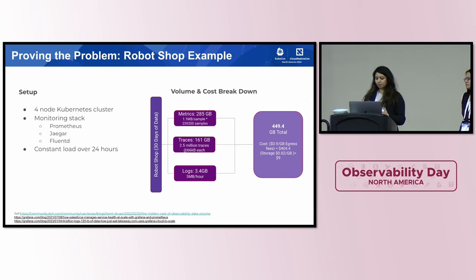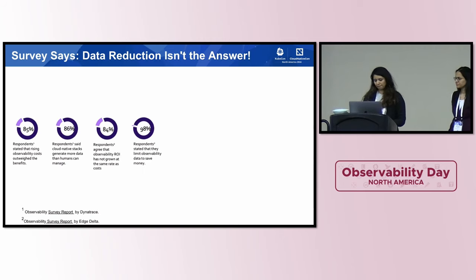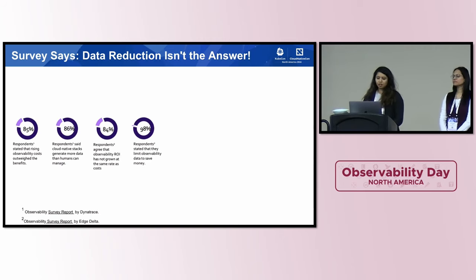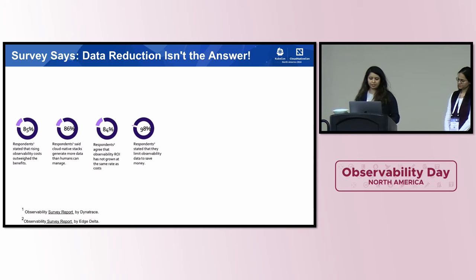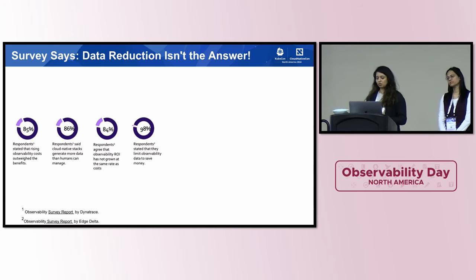We have links to some real-world use cases that generate billions of metrics per day, and you can imagine the exponential growth in cost in those. Looking at some survey results, the theme is common: the cost of observability outweighs the benefits. The last metric is pretty telling — 98% of respondents state that they limit observability data to save cost.